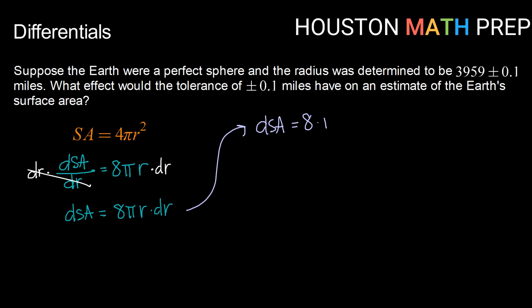The change in surface area would be equal to 8 times π times our radius, which would be 3959 times dr or the change in r. That's our tolerance of plus or minus 0.1.